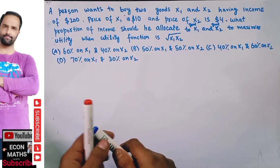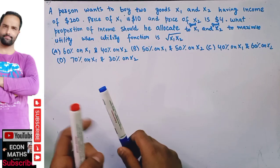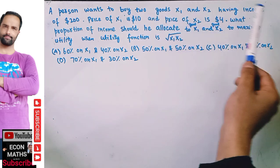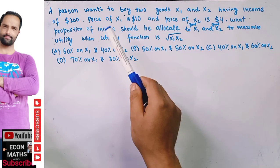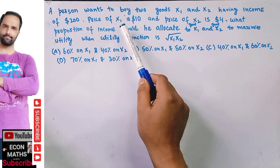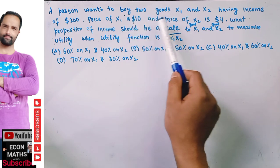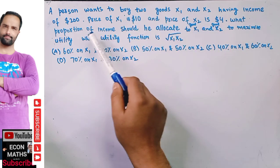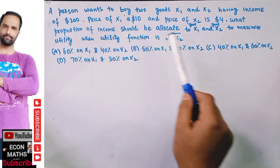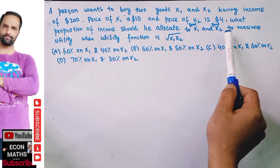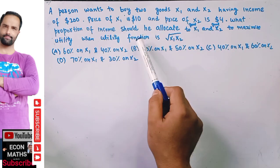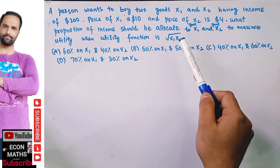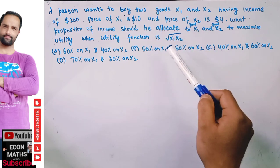Let us solve a question on utility maximization. A person wants to buy two goods X1 and X2 having total income of $200. Price of good X1 is $10 and price of good X2 is $4. What proportion of income should he allocate to good X1 and X2 to maximize utility when the utility function is given as the square root of X1 times X2?